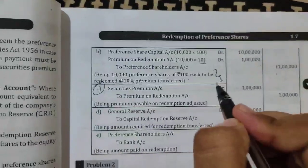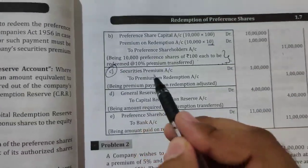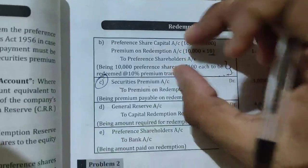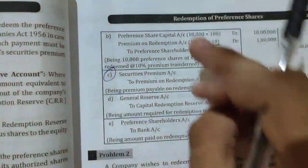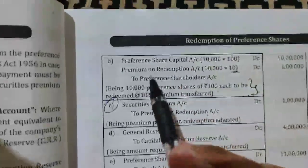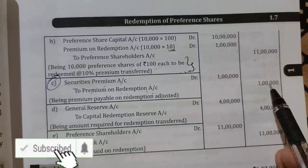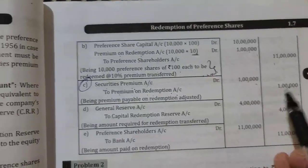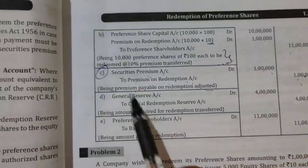Next, pass the securities premium account entry. Securities premium account is debited and premium on redemption account is credited. After the preference share capital entry, this entry must follow. Since there is a premium on redemption, write 1 lakh on the premium on redemption side and the same 1 lakh on the securities premium side. Being premium payable on redemption adjusted.